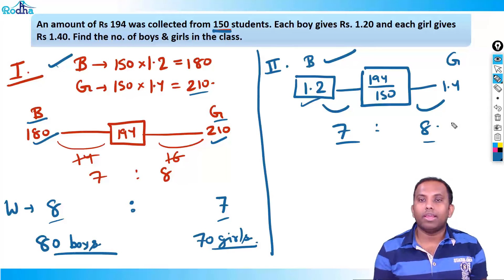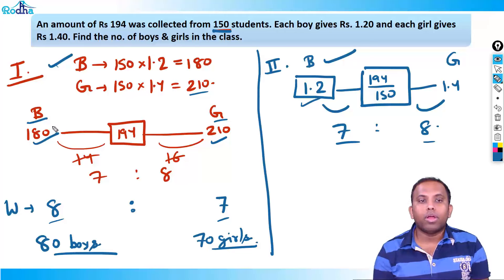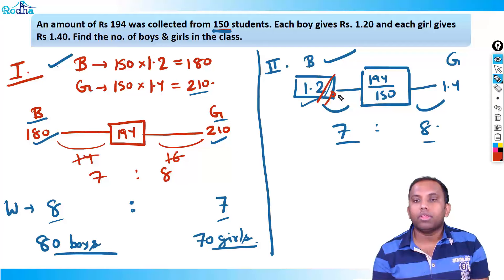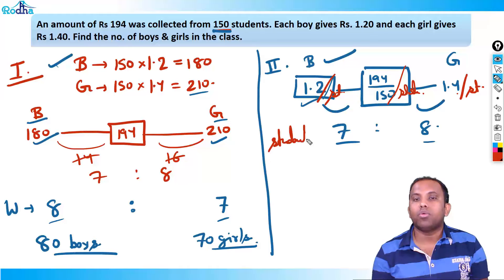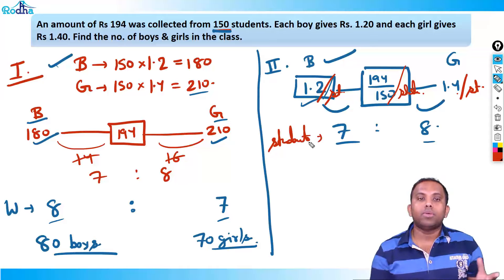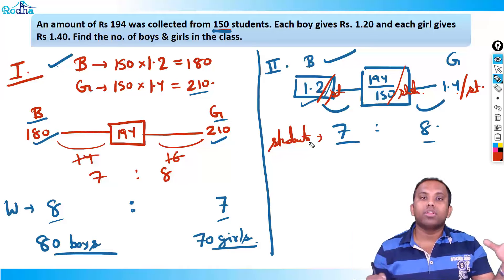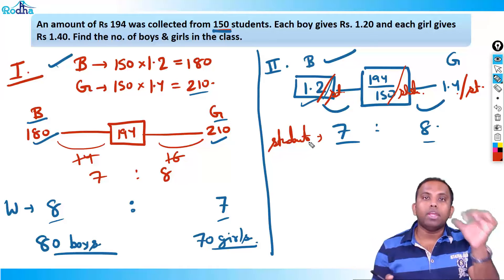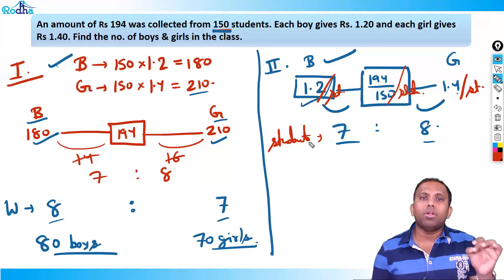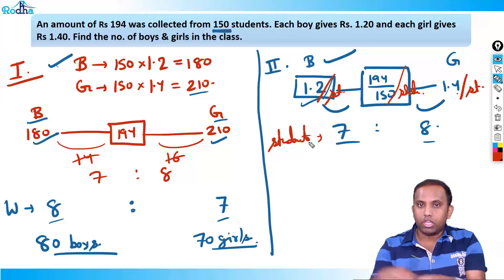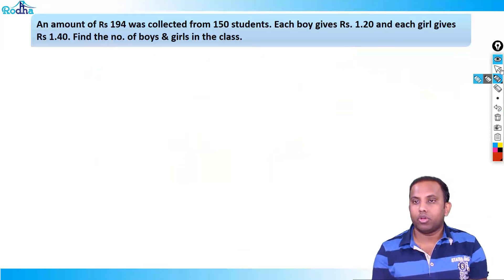Here's a key concept in allegation: what you allegate matters. The collection here is per student, so you get the ratio of students. Remember: whatever comes after 'per' is what you get the ratio of. Collection per student → student ratio. Marks per question → question ratio. This is a small but super important trick for solving these kinds of questions.